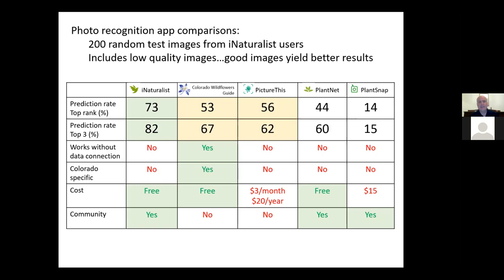iNaturalist, the Colorado Wildflowers Guide, and PlantNet are all free. PictureThis has a subscription — either $3 a month or $20 per year. PlantSnap is $15 as a one-time purchase. Three of the apps have a community component where you can interact with other people and help identify flowers; PictureThis and the Colorado Wildflowers Guide do not. That's a comparison of the advantages and disadvantages of the five most commonly used apps for Colorado.